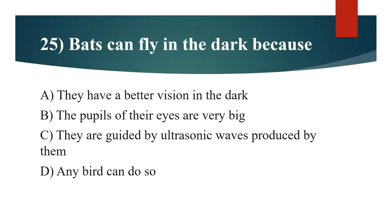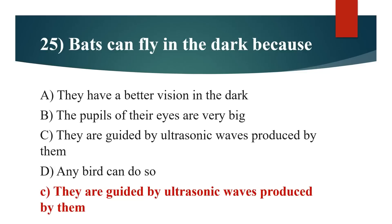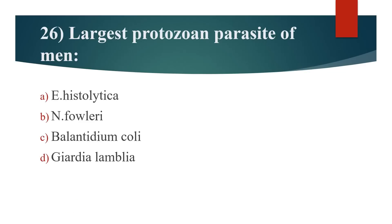25th question: Bats can fly in the dark because? Option A: They have better vision in the dark. Option B: The pupils of their eyes are very big. Option C: They are guided by ultrasonic waves produced by them. Option D: Any bat can do so. Answer is Option C: They are guided by ultrasonic waves produced by them.